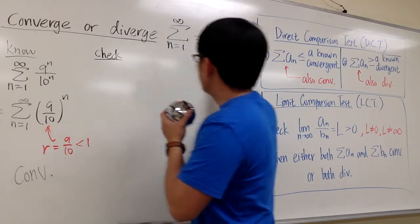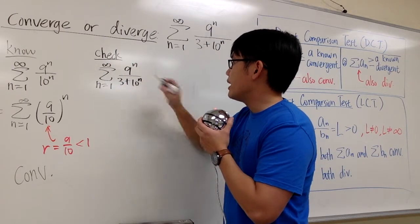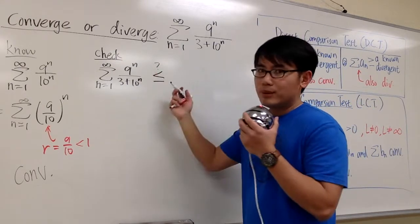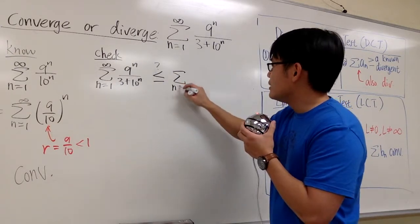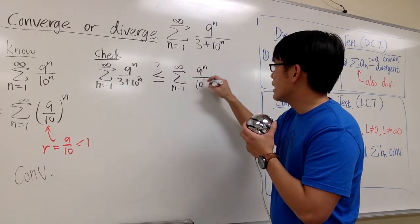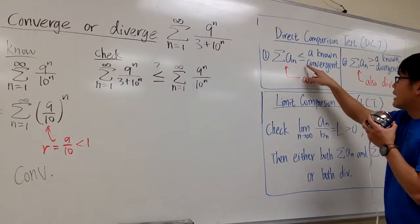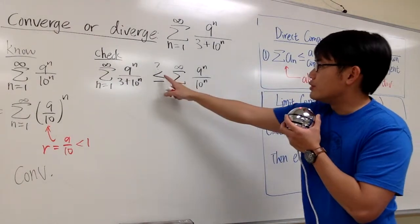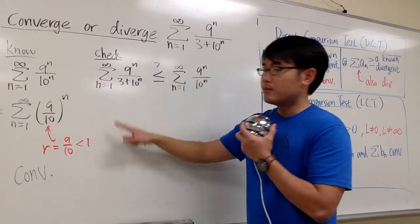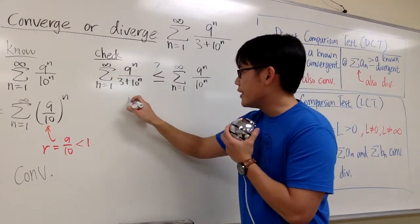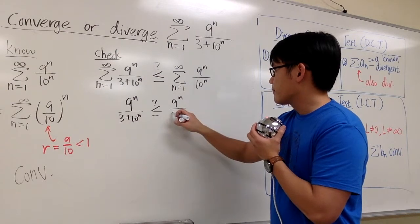I'm going to put down sigma when n goes from 1 to infinity of 9 to the n over (3 plus 10 to the n), and we hope to show that this is less than or equal to — I'll put a question mark for now — the convergent we already know, which is sigma from n equals 1 to infinity of 9 to the n over 10 to the n. The inequality part is very important: make sure you set up the correct one. If you have a convergent on the right, you need this to be less than or equal to that convergent. The rest is just algebra. We can forget about the sigma since both go from 1 to infinity, so we're just comparing 9 to the n over (3 plus 10 to the n) — is this less than or equal to 9 to the n over 10 to the n?